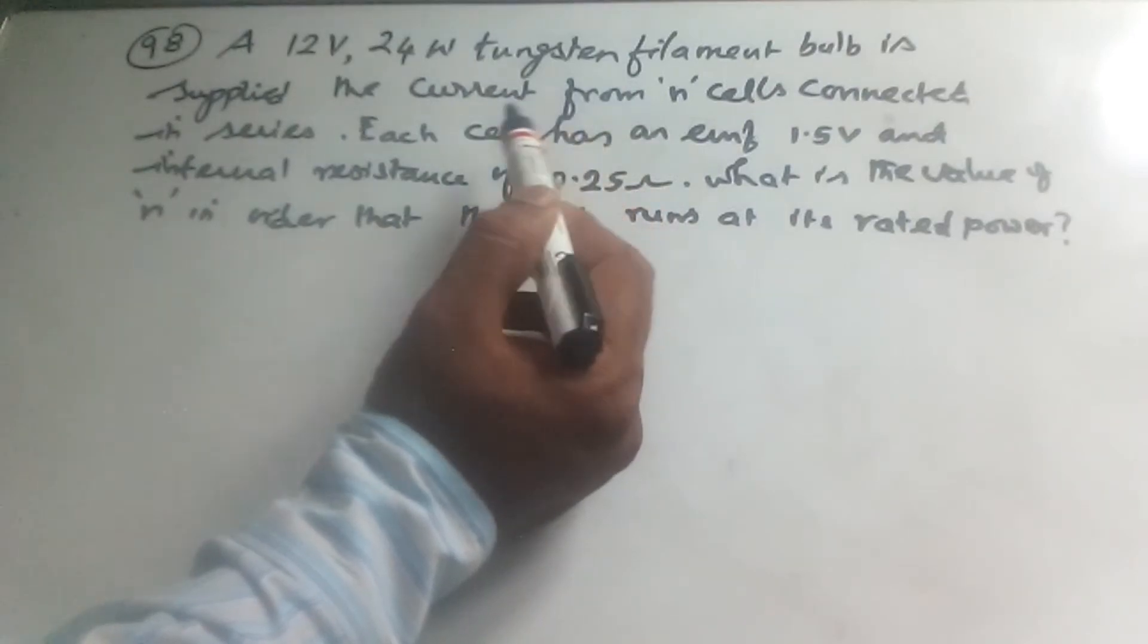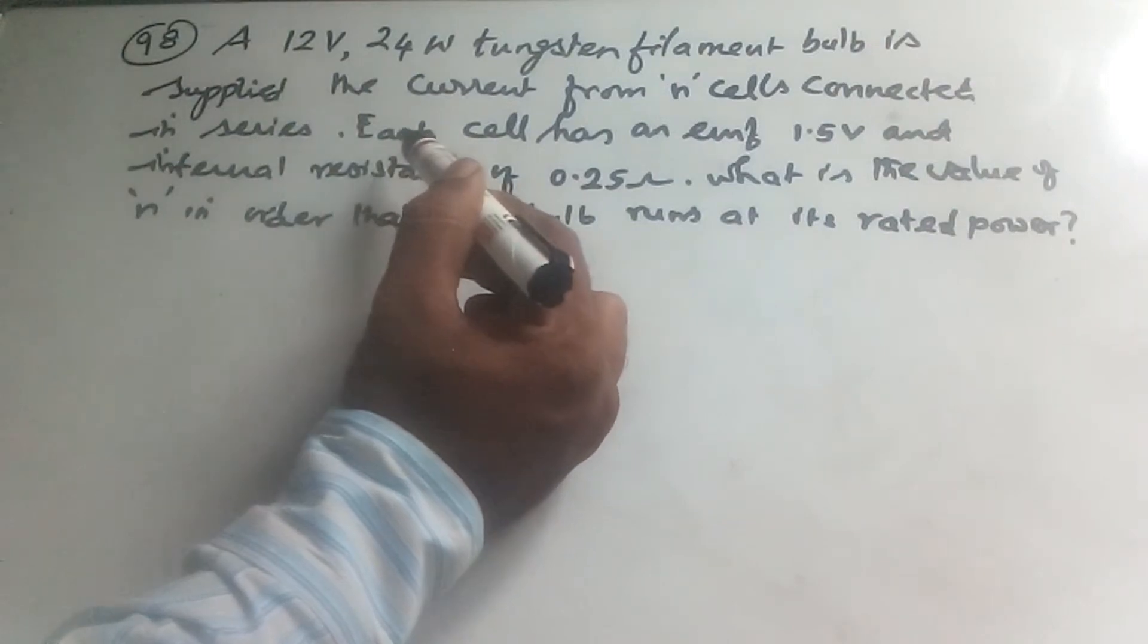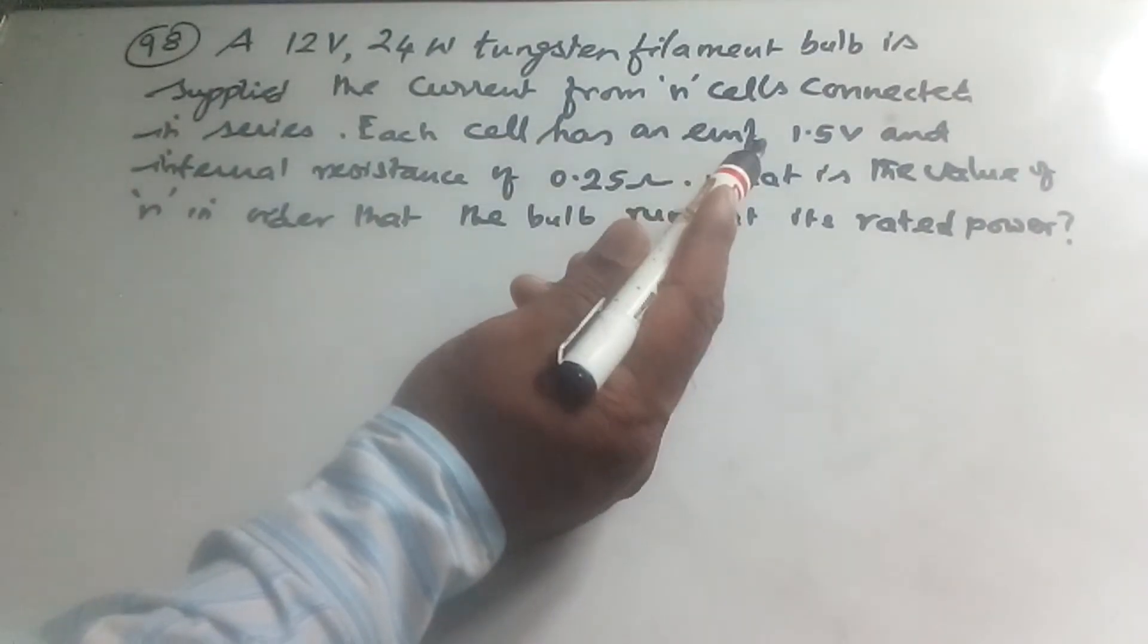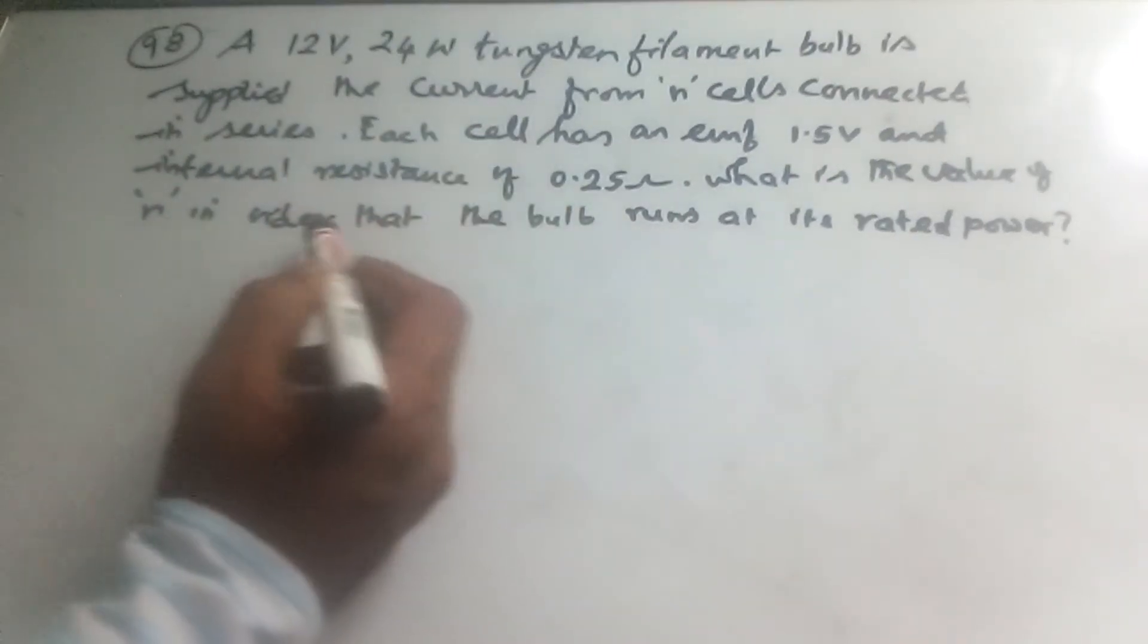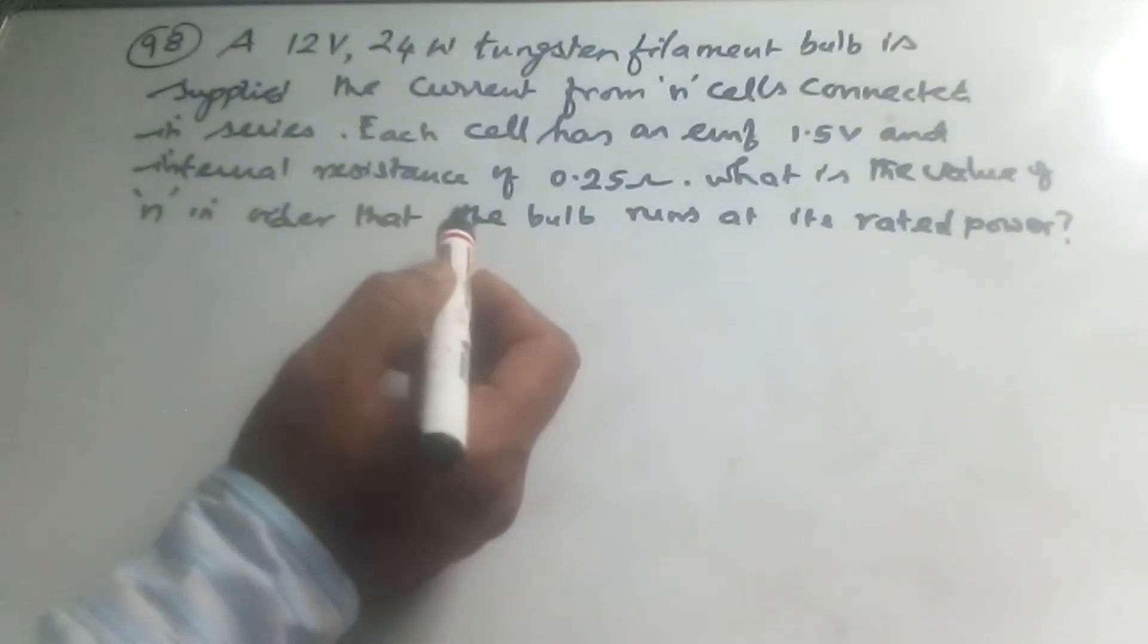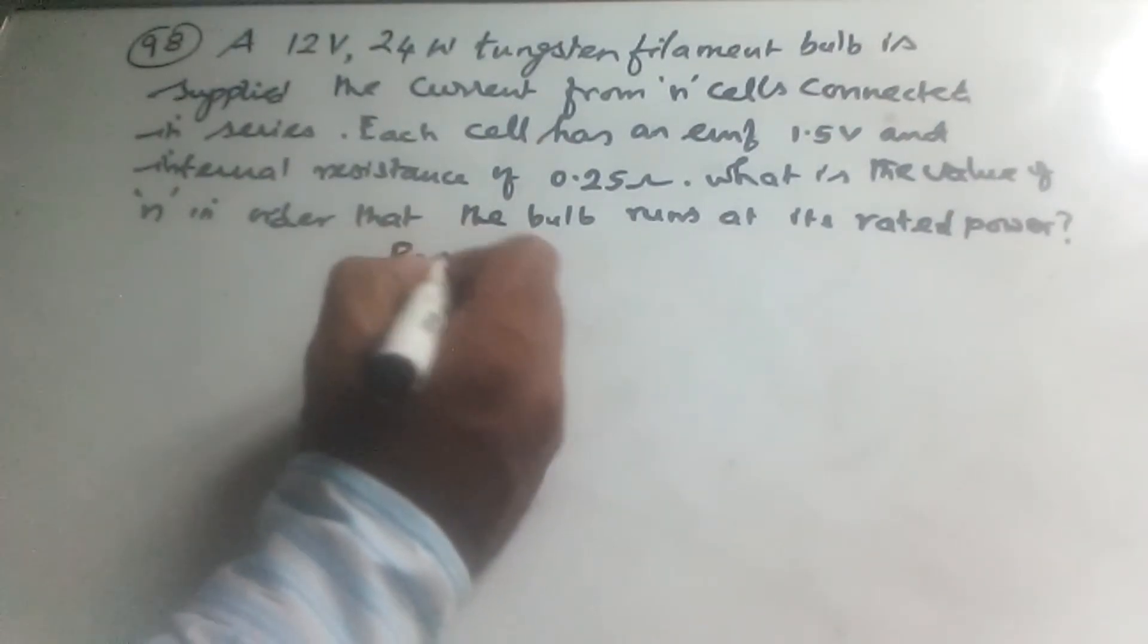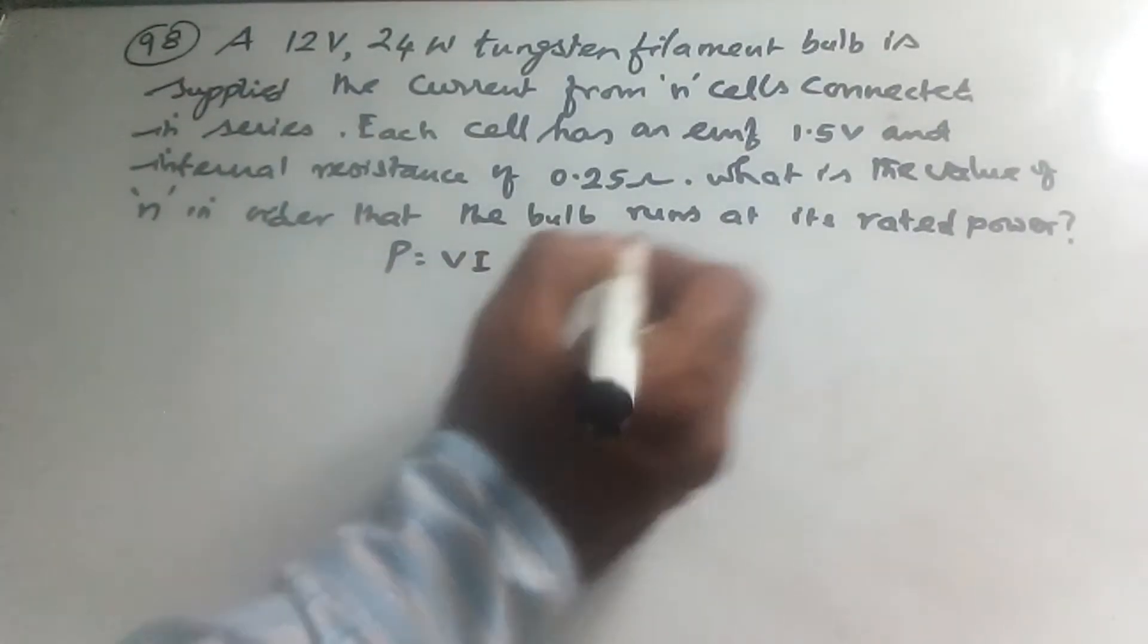The n cells are in series, and the current through the tungsten filament bulb will flow through them. We know that power is equal to the product of V and I, so P = VI. This gives us 24 = 12 × I, so I = 2A.